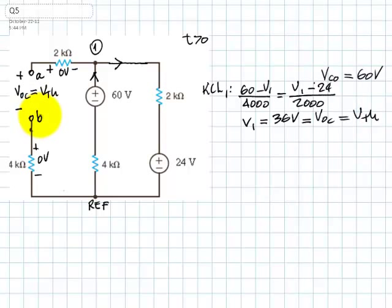Now let's find RThevenin. To do that, we kill all the sources, and these are voltage sources, so to kill them we replace them with a short circuit. Now we look into the circuit. What is the resistance? That resistance is going to be RThevenin. That is going to be 2 in series with 4, in series with a parallel of 4 and 2.